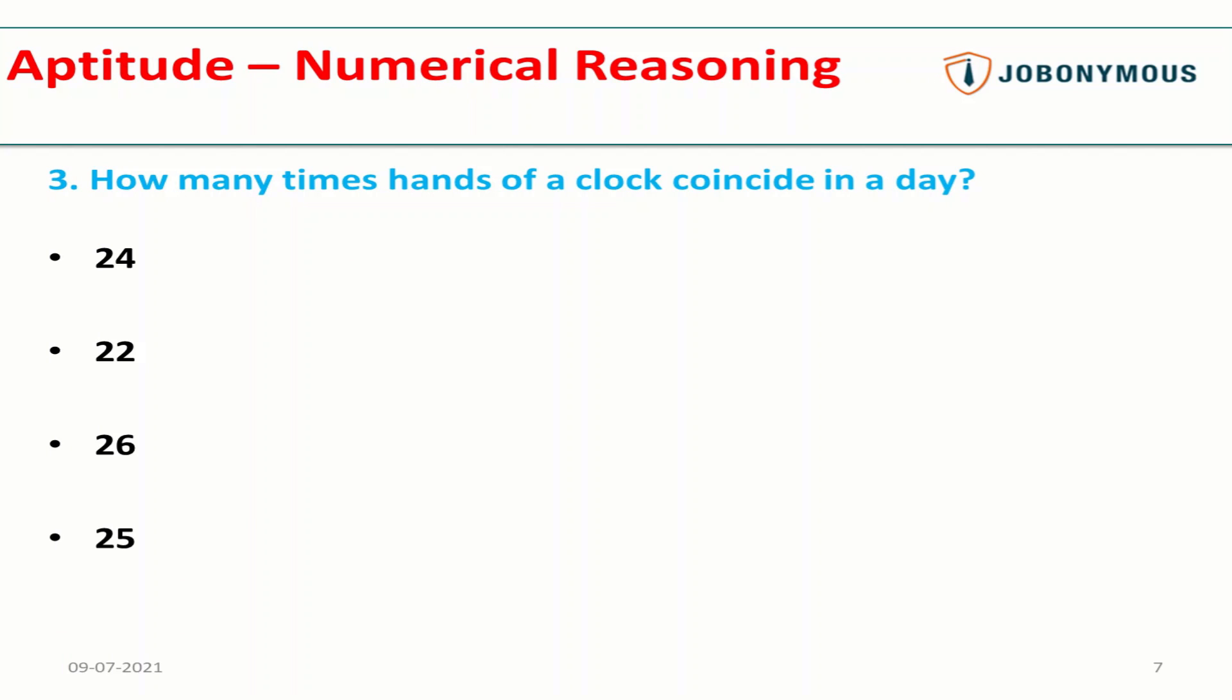Next question: How many times do the hands of a clock coincide in a day? This is a bit tricky because most people think that in a particular day there are 24 hours, so every one hour the hands of a clock coincide, meaning in one day it will coincide 24 times. However, this is not the answer.